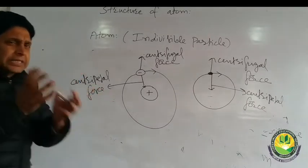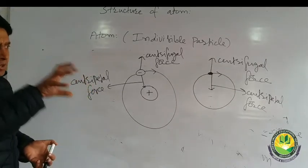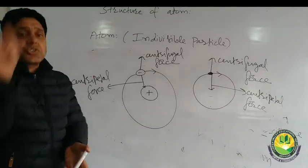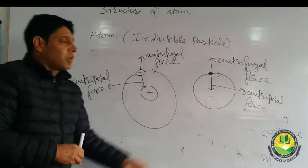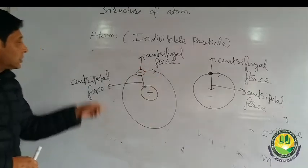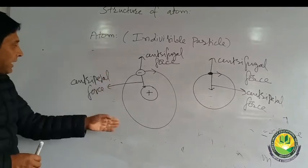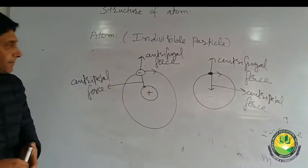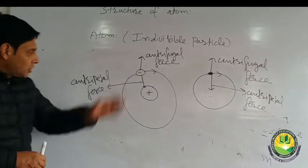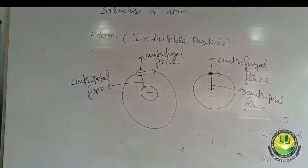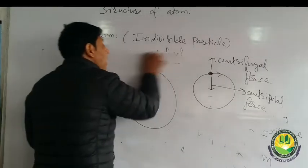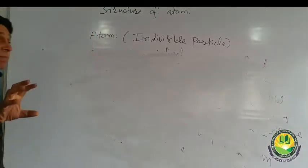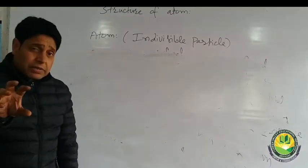So Rutherford's model of atom has two main features: one, there is a nucleus which is positively charged, small in size, and denser in nature; and two, electrons revolve in circular tracks around the nucleus. The electrostatic force of attraction acts as centripetal force to balance the centrifugal force. Now the question is: if Rutherford's model of atom came, then why was Bohr's model needed? We need to understand the drawback in Rutherford's model.